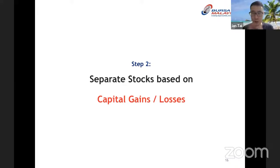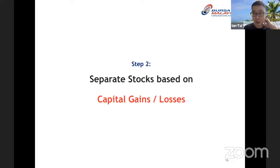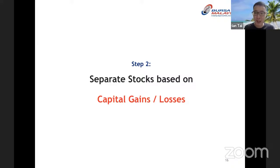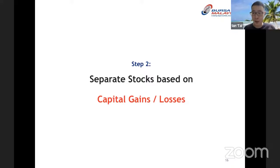Now we move on to step number two. Imagine you have your own portfolio like the 10 stocks I showed you. The first thing we're going to do is separate the stocks based on capital gains and losses — which stocks have achieved capital gains and which have incurred capital losses.